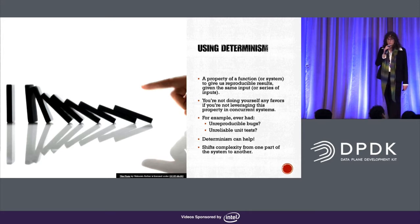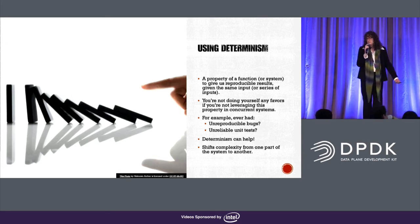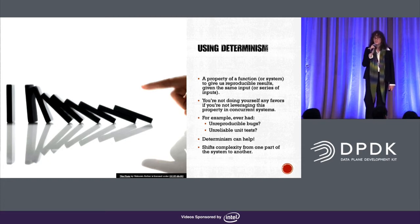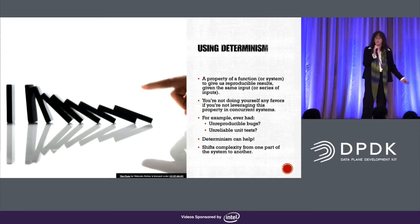So why is determinism important? Determinism is a property of a function or system that gives us reproducible results given the same input or series of inputs. I think we're not doing ourselves any favors if we're not leveraging this property in concurrent systems. I'm sure we've seen our share of unreproducible bugs and unreliable unit tests, and if we leverage determinism, we can help a lot with these problems. In terms of complexity, I think determinism shifts complexity to different parts of the system rather than actually changing the overall complexity.